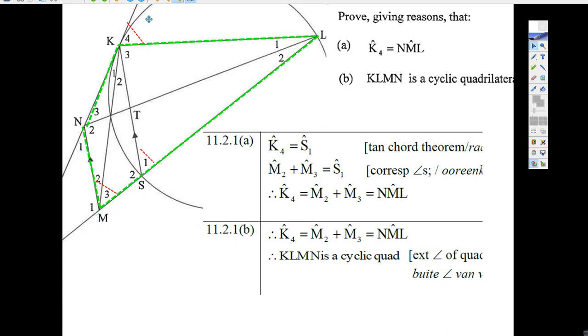you were given that this was a tangent line here, this KN along here, this is a tangent line, so that means that K4 equals S1 because the angle between a tangent and the chord is equal to the angle that subtends the same chord up in the opposite segment here. So, there you go. That's the first thing, K4 equals S1 because of the tangent-chord theorem.